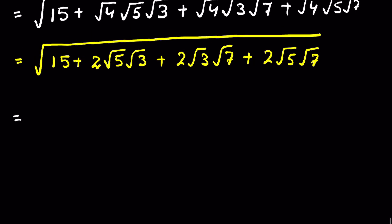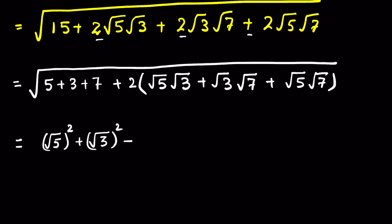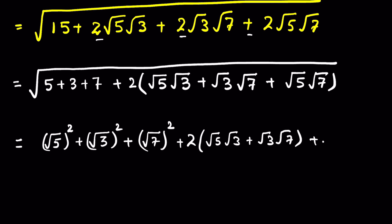Now write 15 as 5 + 3 + 7 (since 5 + 3 = 8 and 8 + 7 = 15), and factor out 2. A pattern emerges: we can write 5 as (√5)², 3 as (√3)², and 7 as (√7)². So we have (√5)² + (√3)² + (√7)² + 2(√5·√3 + √3·√7 + √5·√7) under the square root.